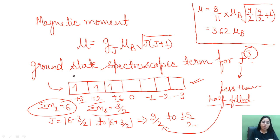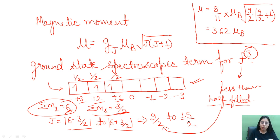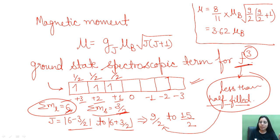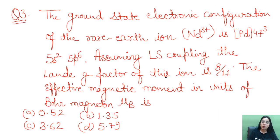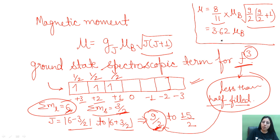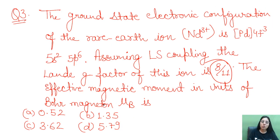Filling three electrons in the f orbital: ΣmL = 6 (L=6), Σms = 3/2 (S=3/2). J ranges from L−S = 9/2 to L+S = 15/2. Since f³ is less than half-filled, the lower J value gives the ground state, so J = 9/2. Substituting J = 9/2 and g = 8/11 into the magnetic moment formula gives approximately 3.62 Bohr magnetons — Option C.